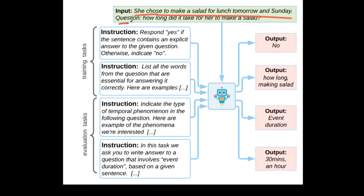And the question is, how long did it take for her to make a salad? But you can instruct the LLM to respond with just yes or no, so that the output is a no or a yes. This is how you can add instructions to the LLMs.